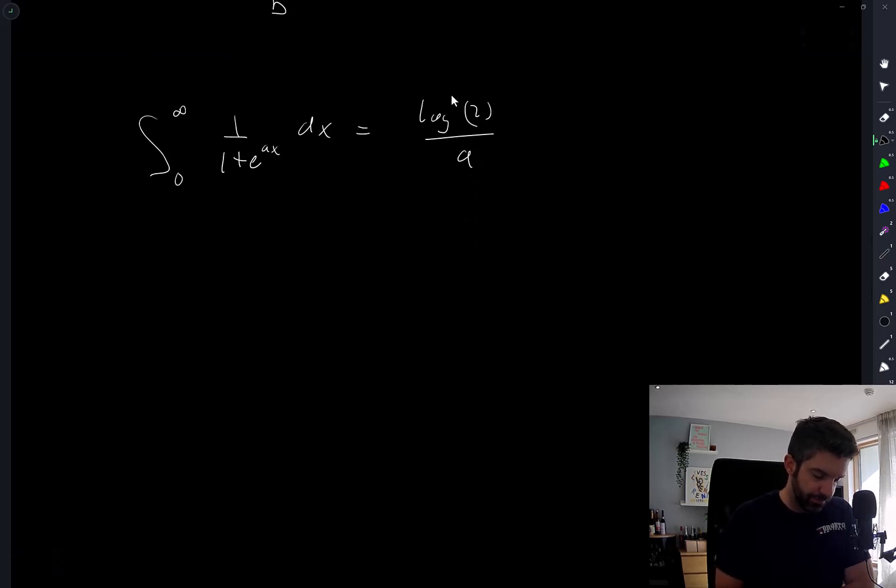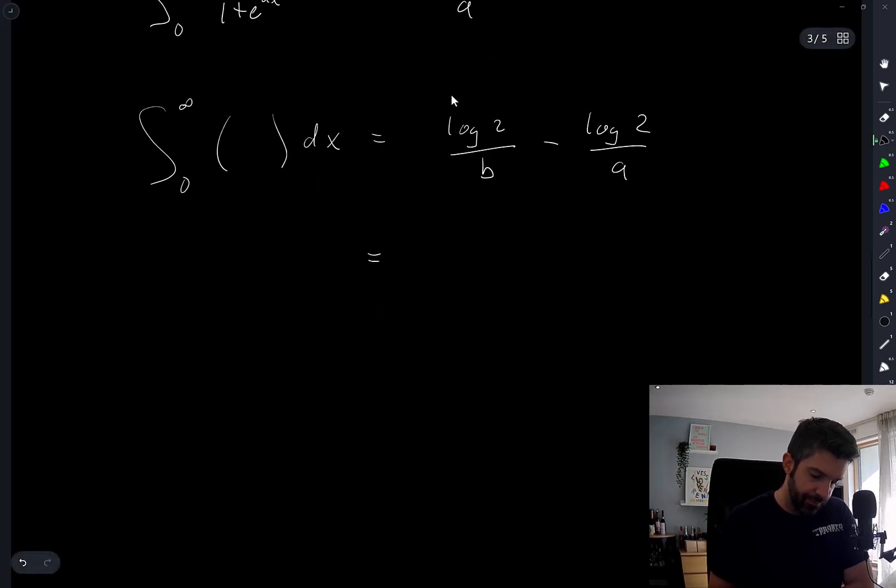So my total integral, integral from zero to infinity of everything, is equal to log base two over b minus log base two over a, which is a minus b over ab times log two. And that's option E.